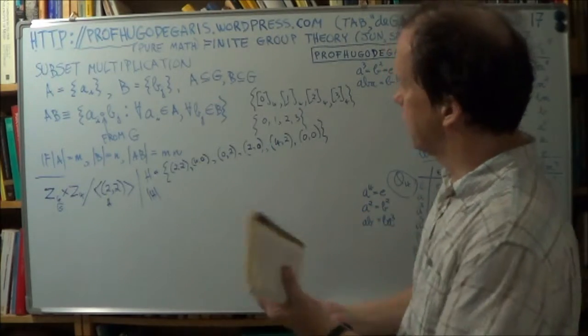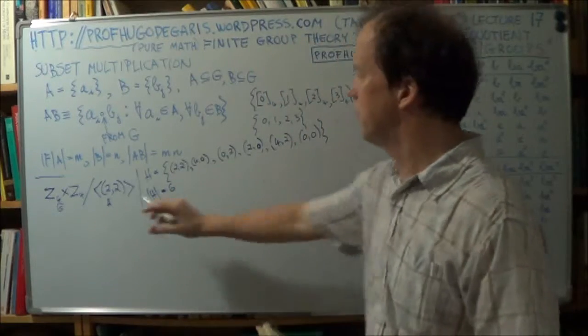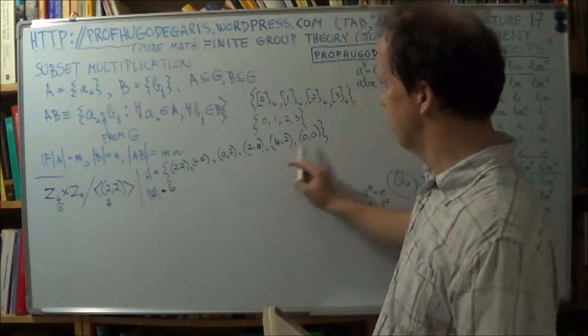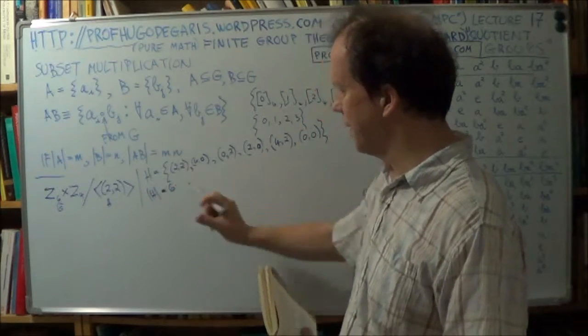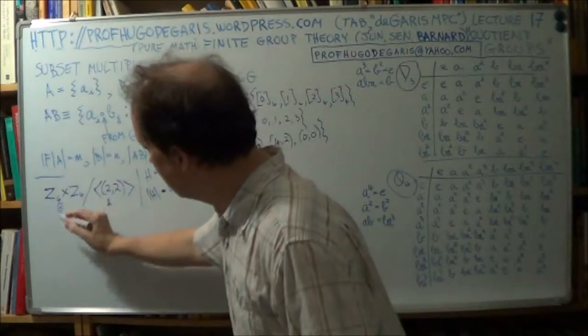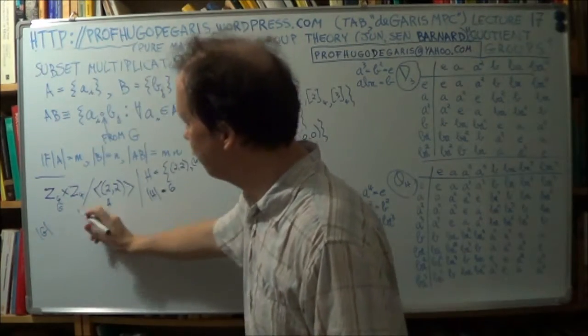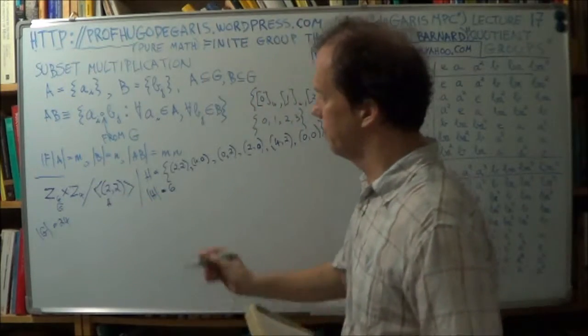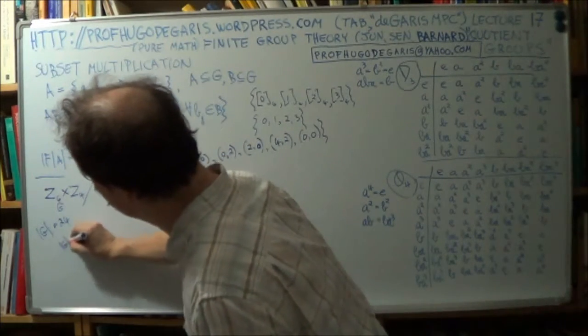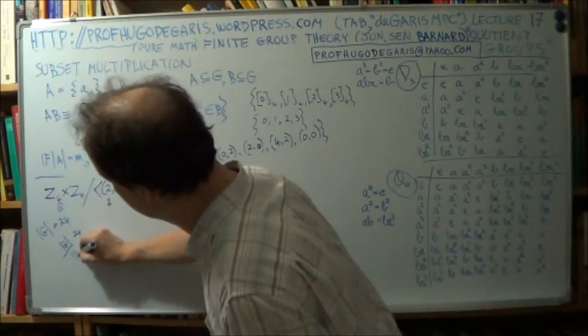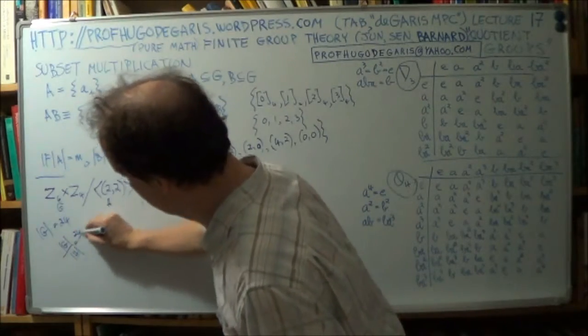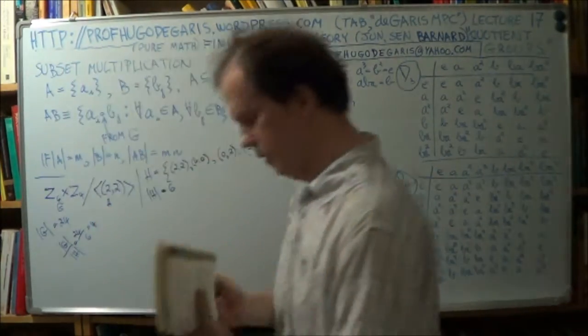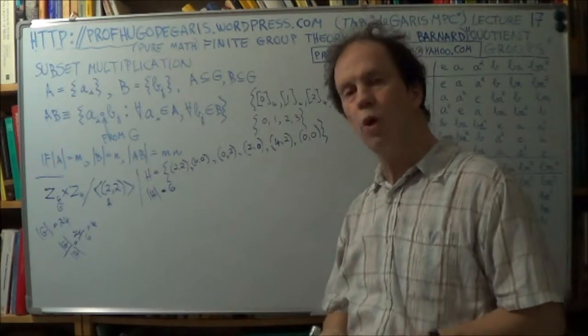Now we have one, two, three, four, five, six elements. So the size of this subgroup, by definition this is the group generated by this element, right? So the order of this subgroup is six. Okay? Now what's the order of G, the group here? Well, six by four, that's 24. Alright, what's the order of your quotient group? Well, it'll be, remember the formula, it's the size of the group divided by the size of your normal subgroup, which is H. So that'd be 24 divided by, now what is the size of this? Well, it's six. Right? So it's four. So our quotient group is of order four.